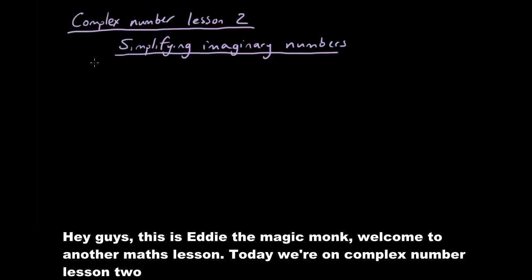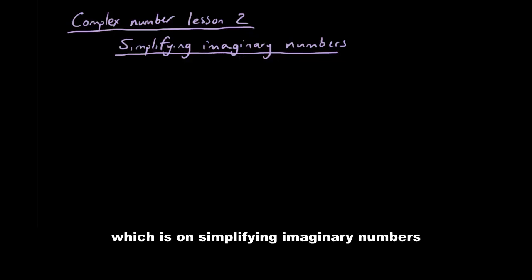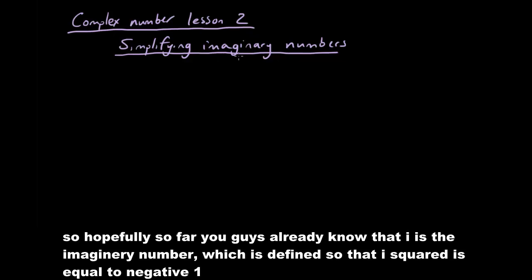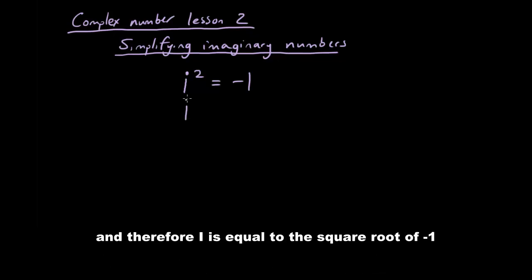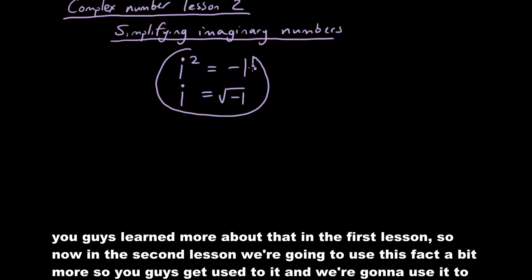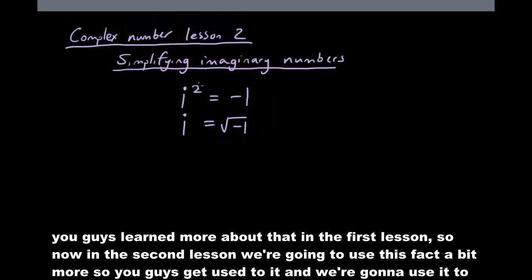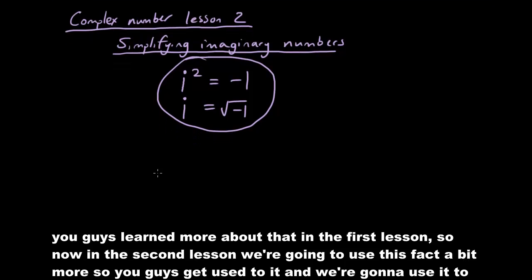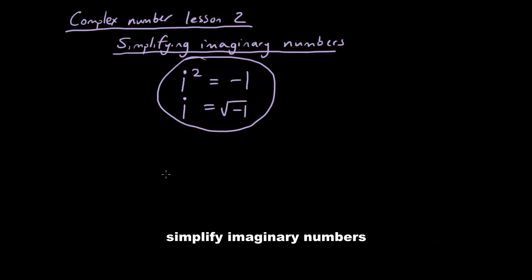Hey guys, this is Eddie the Magic Monk. Welcome to another math lesson. Today we're on complex number lesson 2, which is on simplifying imaginary numbers. So hopefully you guys already know that i is the imaginary number, defined so that i squared is equal to negative 1, and therefore i is equal to the square root of negative 1. You guys learned more about that in the first lesson. Now in the second lesson we're going to use this fact to simplify imaginary numbers.